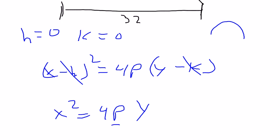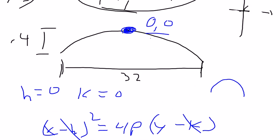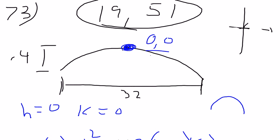So now how do we find the p? Well, just like in 19 and 51, to find p, all we need is one point on this graph. So we actually know two points. We know this one, and we know this one.